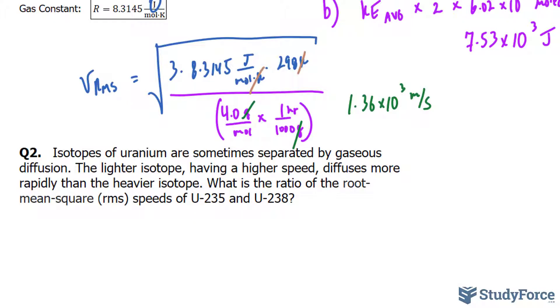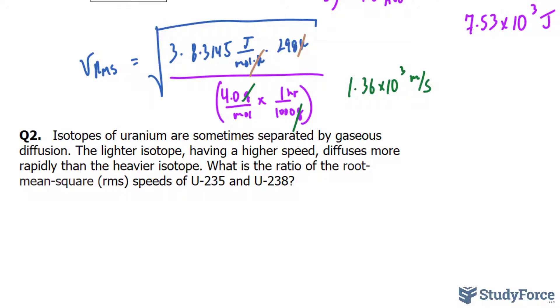In question number two, we're asked: isotopes of uranium are sometimes separated by gaseous diffusion. The lighter isotope, having a higher speed, diffuses more rapidly than the heavier isotope. What is the ratio of the root mean square speeds of uranium-235 and uranium-238?